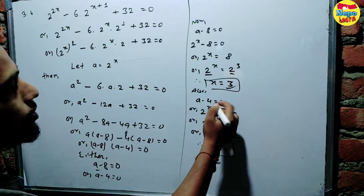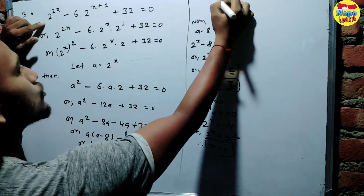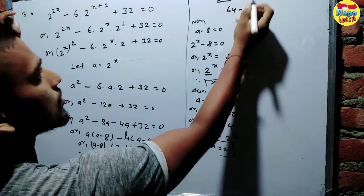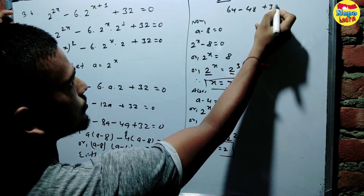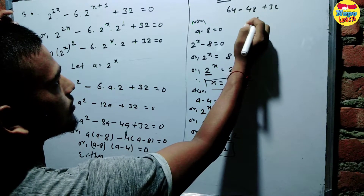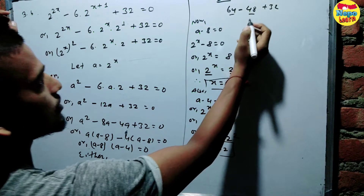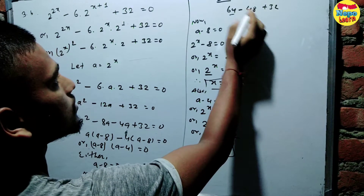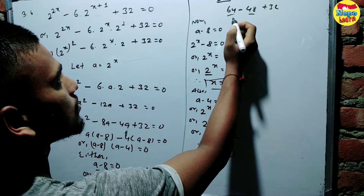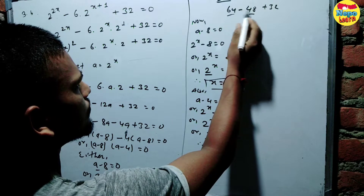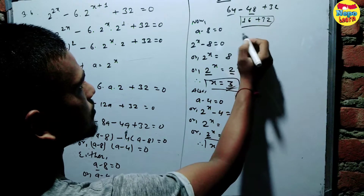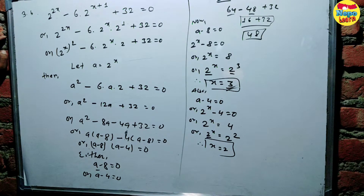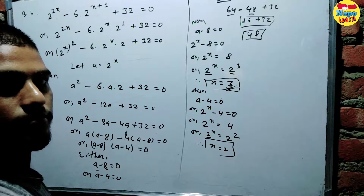So x equals 3 from the first condition, and x equals 2 from the second. Now verifying by substituting x equals 3: 6 minus 6 into 2, giving 2 to the power 3 plus something. We get 48 and checking: six times eight is forty-eight. The answer checks out, so x equals 2 or x equals 3.